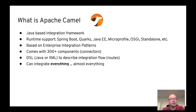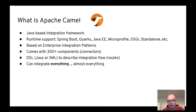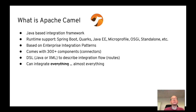Camel is a Java-based integration framework. It has great runtime support for many runtimes you know today, including Spring Boot, Quarkus, JavaEE, MicroProfile and so on. It's based on the ideas from the book Enterprise Integration Patterns, and it comes with a lot of components — which you can think of like Kafka connectors. You mainly use a DSL, which you can write in Java or XML, to define and describe how systems are integrated in Camel routes, and it can integrate with almost everything.